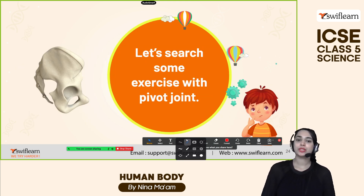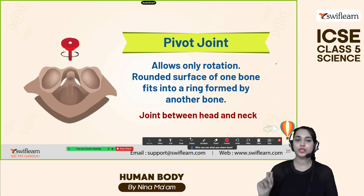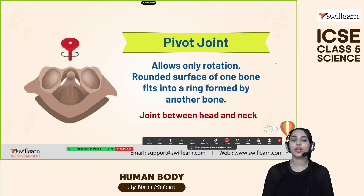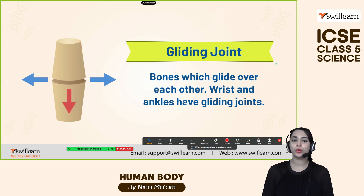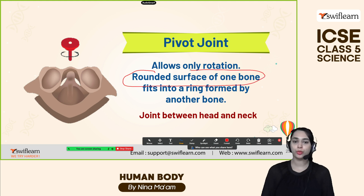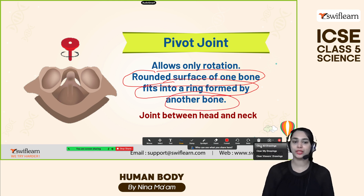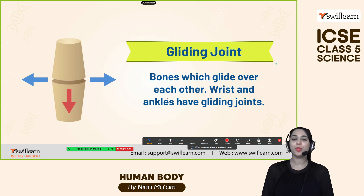Now let's explore the pivot joint. The pivot joint allows only rotation, just like your head and neck joint. That's why you can rotate your neck clockwise and anti-clockwise. The rounded surface of one bone fits into a ring formed by another bone — that is the pivot joint. The gliding joint is where bones glide over each other; wrists and ankles have gliding joints.